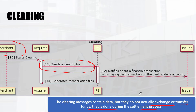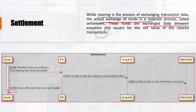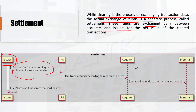The actual transfer of funds is called settlement. Clearing is the process of exchanging transaction data; the actual exchange of funds is a separate process called settlement, and they happen in batches. These funds are exchanged daily between acquirers and issuers for the net value of all cleared transactions. The issuer transfers the funds according to the clearing file received earlier, the IPS transfers funds via the reconciliation file to the acquirer, and the acquirer credits the funds to the merchant's account.